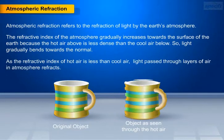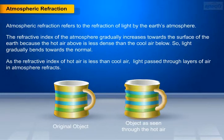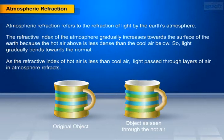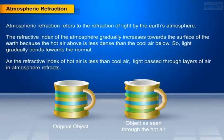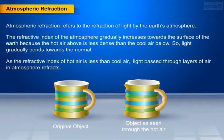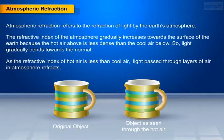As the refractive index of hot air is less than cool air, light passing through layers of air in the atmosphere refracts. Here, in this image the object is clearly seen in the normal air. But if we see the same object in hot air, it appears disturbed. This is due to the density of the hot air.